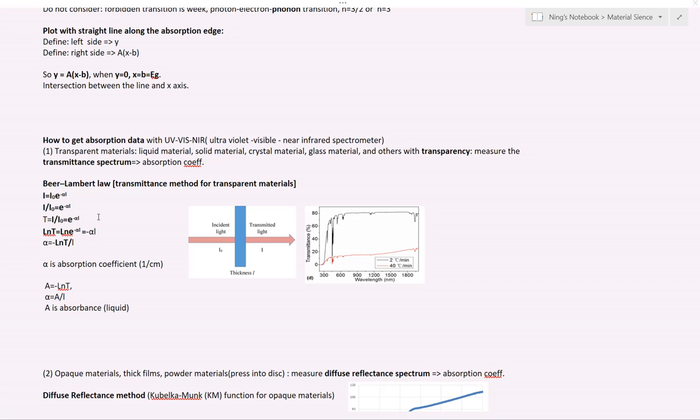Here is the Beer-Lambert law. We call this method the transmittance method. Some equations are here. We know that there is an exponent function here. The exponent is minus alpha L, where L is the thickness of the sample.